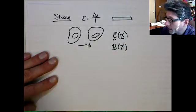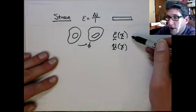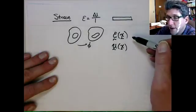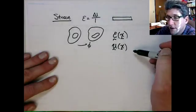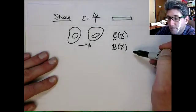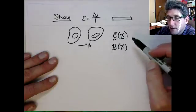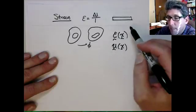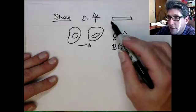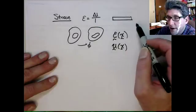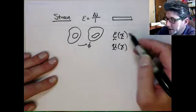There's a displacement field defined at a point, and similarly we have a strain field which is defined at a point. So the strain — we have to get away from the concept of it being a quantity defined over a finite length, and instead think of it as defined at a point.